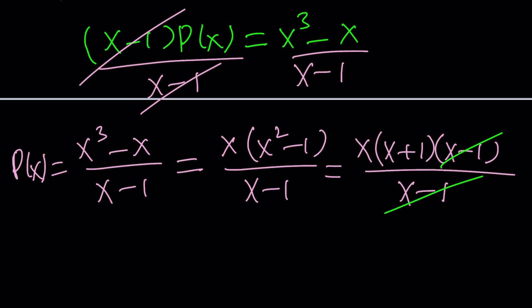We get the value of p of x in its glory. And that's a polynomial. If you distribute, p of x becomes x squared plus x. And that's it.